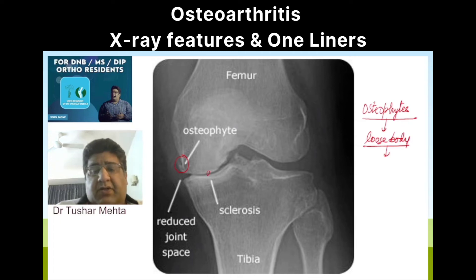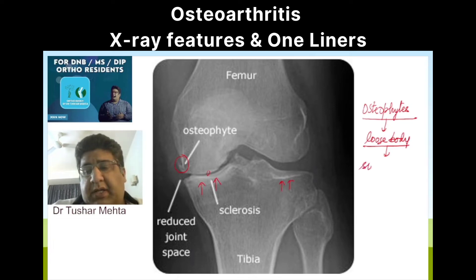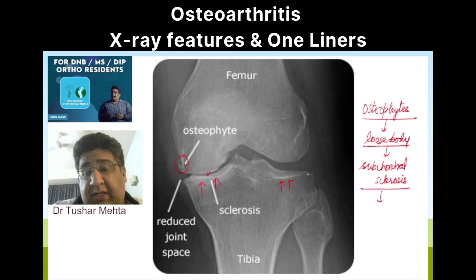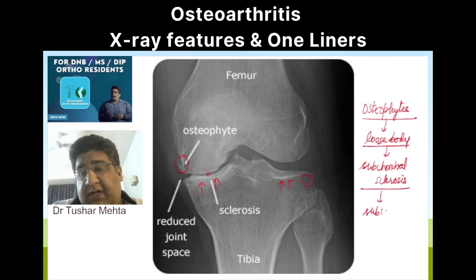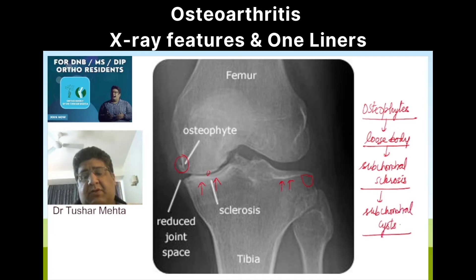Any bone that looks a little more white on an X-ray is called sclerosis. You can see this bone is a little extra white here, and since it is just beneath the cartilage, we call it subchondral sclerosis. You can also see a fluid-filled cavity in this area — a fluid-filled cavity is called cyst formation, and since it is just below the cartilage, it is called subchondral cyst formation. This is the chronology of X-ray signs.